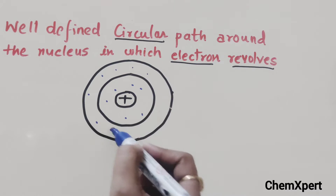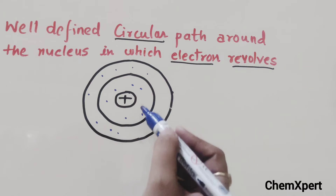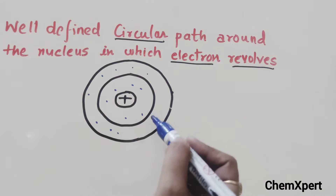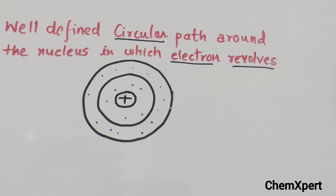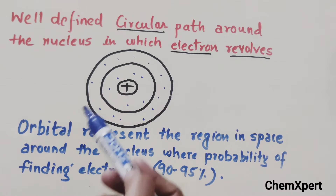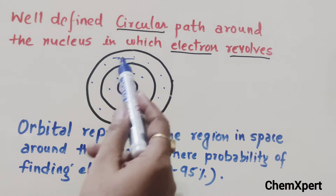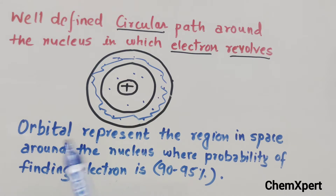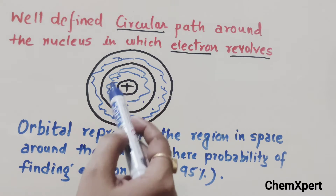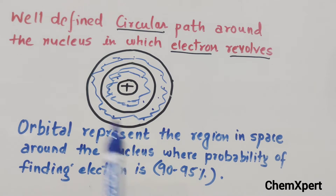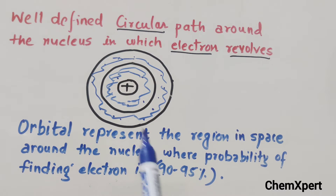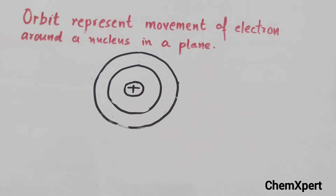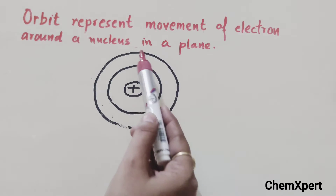Orbital represents the region around the nucleus — it is the region or space around the nucleus where the probability of finding the electron is maximum, that is 90 to 95 percent. This is not a fixed path but a space around the nucleus where the probability of finding the electron is maximum.